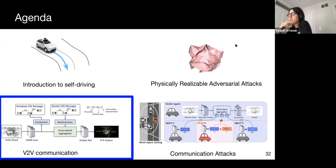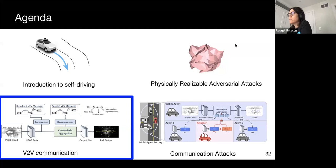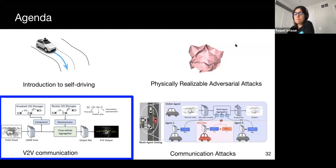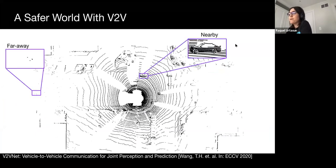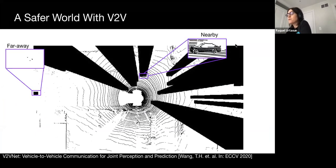We are now going to pause our discussion of adversarial examples for self-driving and fast forward to how the future might look. Let's analyze the main challenges that current state-of-the-art perception and prediction systems — PMP for short — have. Given sensor readings, PMP provides the location of objects in 3D as well as future trajectories for the duration of the planning horizon. PMP systems suffer from low visibility in far-away areas and occluded regions due to limited sensor data compared to nearby vehicles.